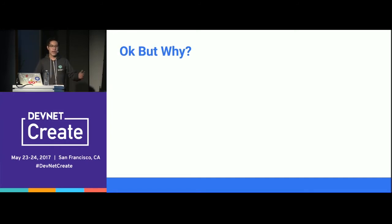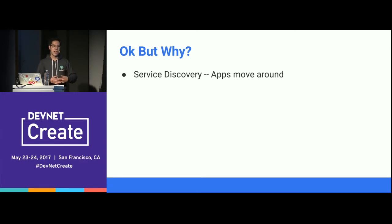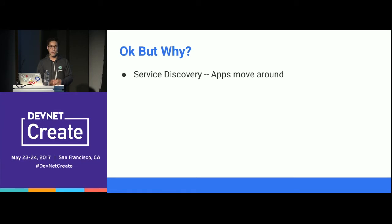Why introduce a separate proxy into your system? As we move from single applications to service-oriented architectures and microservices running in scheduled environments like Kubernetes or Mesos, things move around and become more complicated. You need to take care of service discovery — your app needs to know where all the other services are running and how to send traffic to them. Linkerd handles that, routing traffic to the correct location. That's an infrastructure concern, not an application concern.